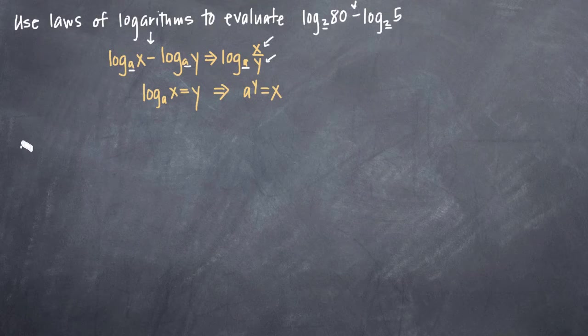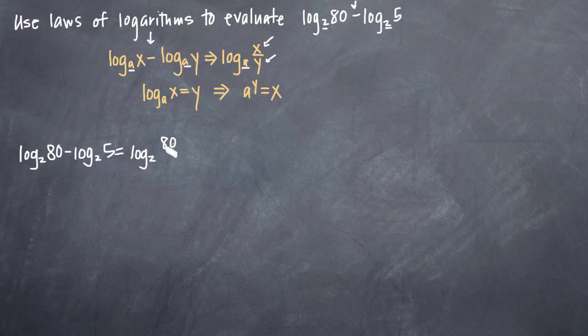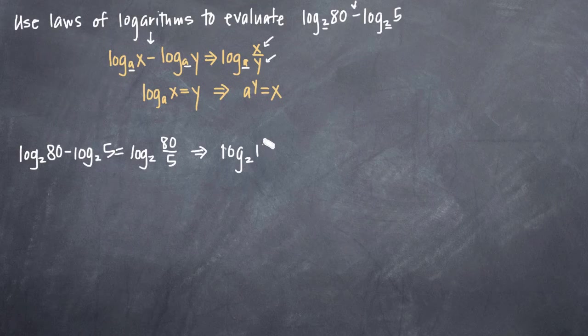So our log base 2 of 80 minus log base 2 of 5 will become log base 2 of 80 over 5. Obviously, we can simplify that by dividing 80 by 5 and we'll get log base 2 of 16 because 80 divided by 5 is 16. So now we've got something that's much simpler than what we started with, but we can still simplify further.